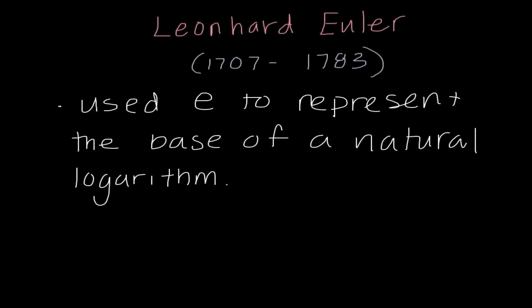However, the last notation thing we're going to talk about with Euler is he used the letter e to represent the base of a natural logarithm. That's the button ln on your calculator. And e, we now call Euler's number. It's named after him.